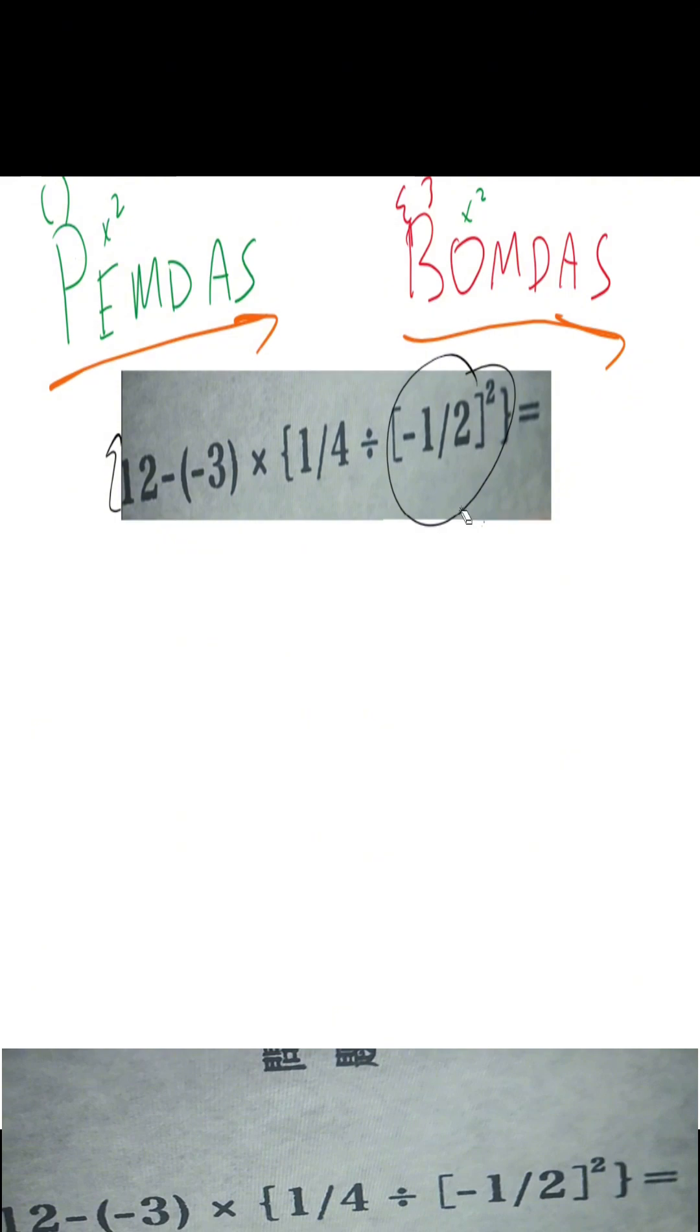Well, negative one half squared is the same thing as just negative one half times negative one half, which is going to give us one fourth.